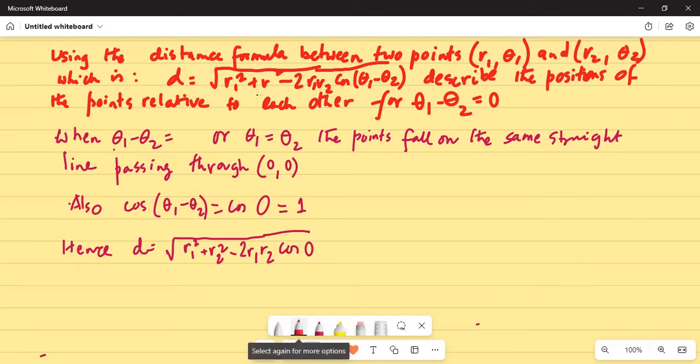The actual correct formula is d equals square root of r1 squared plus r2 squared minus 2 r1 r2 cosine theta1 minus theta2, everything under the square root. So here, because theta1 minus theta2 equals zero, we have...